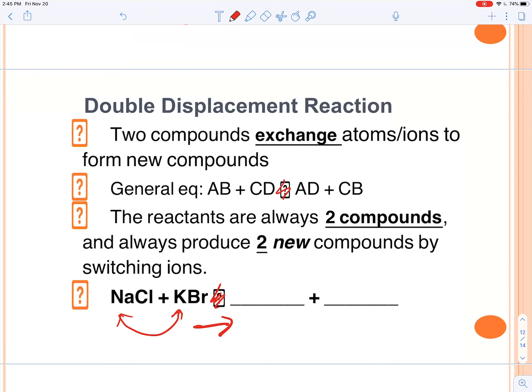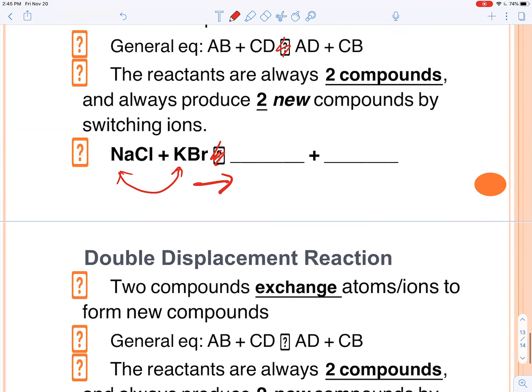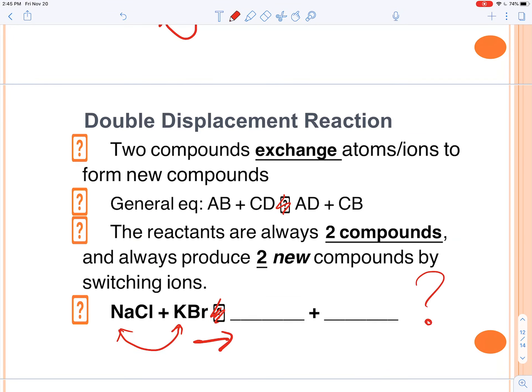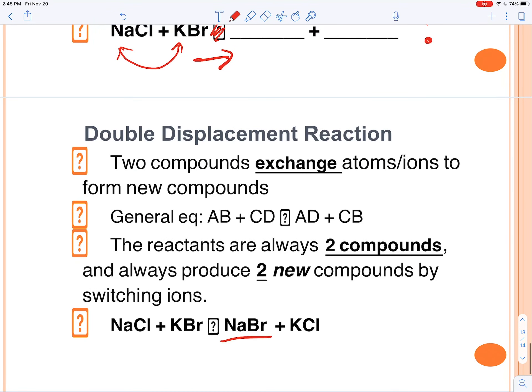In double displacement, they're switching ions, so here the sodium is switching with the potassium. So how about you go ahead and predict these products. What do you think? Okay, if you said NaBr and KCl, you are correct. So review this lecture and notes to help you predict products. Thanks.